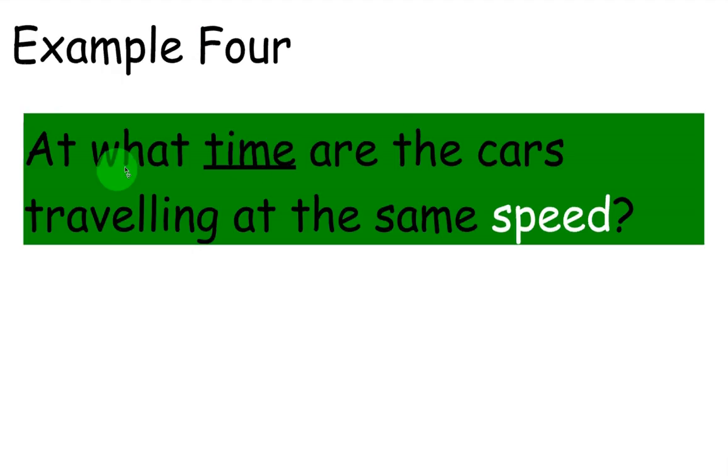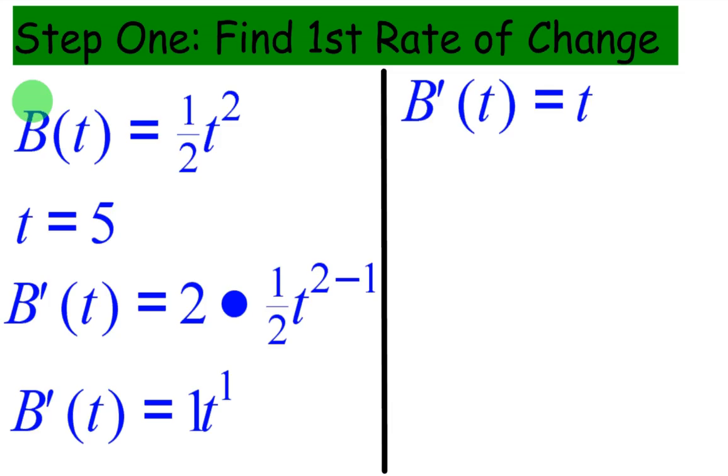At what time are the cars traveling at the same speed? We want to find a particular point in time where they're going the same exact speed. How do we do that? Well, basically speed means derivative, right? So what we want to do is take their derivatives, set them equal to each other, and find the t value where that's true. Remember, a lot of times in math it's all about wording. When we see speed, we should think derivative.